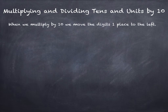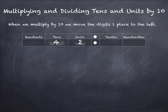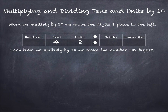When we multiply by 10 we move the digits one place to the left. Here's some tens and units, and every time we multiply by 10 we make the number 10 times bigger.